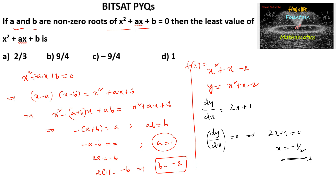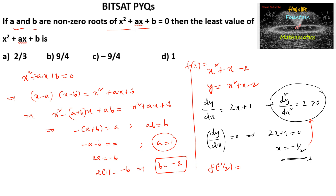At x = -1/2, the second derivative d²y/dx² = 2, which is always positive, confirming a minimum. Substituting x = -1/2: f(-1/2) = 1/4 - 1/2 - 2 = (1 - 2 - 8)/4 = -9/4. So the minimum value is -9/4, which is option C.